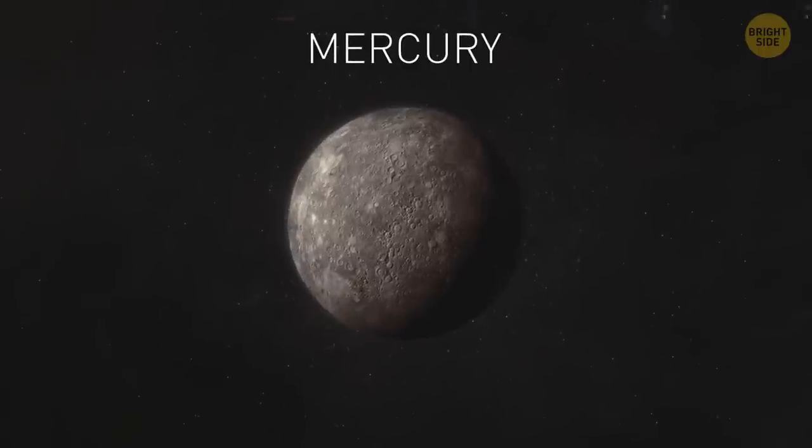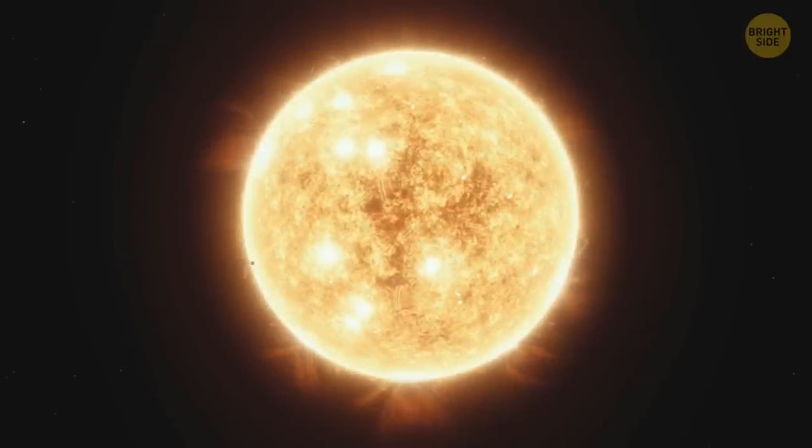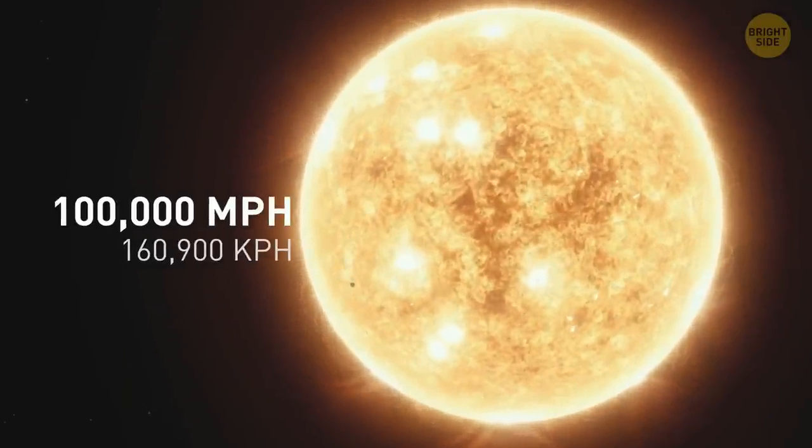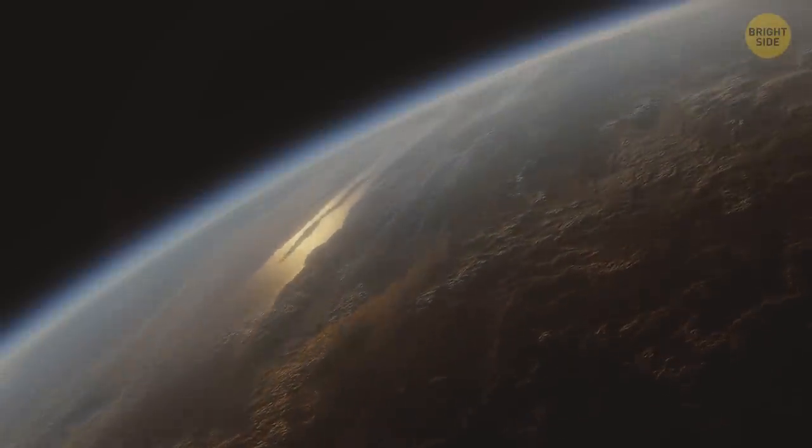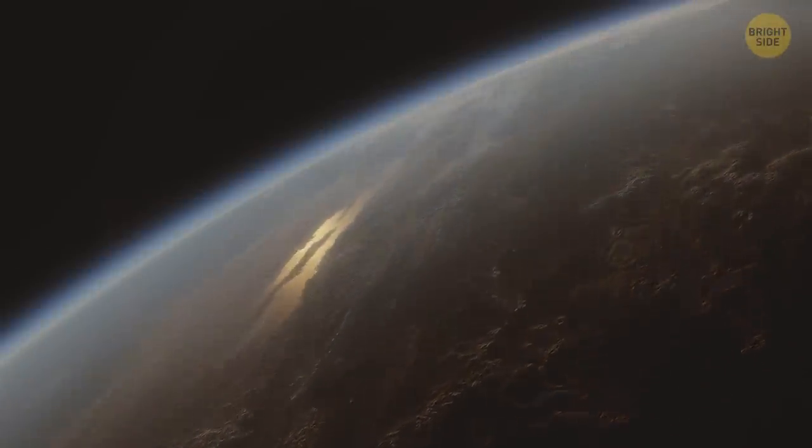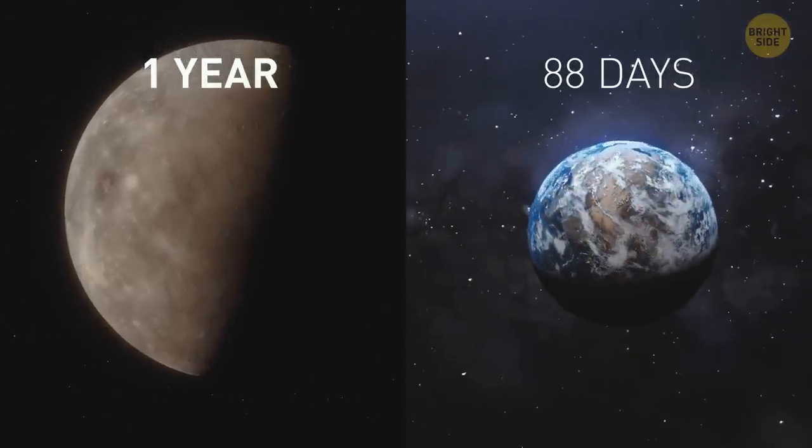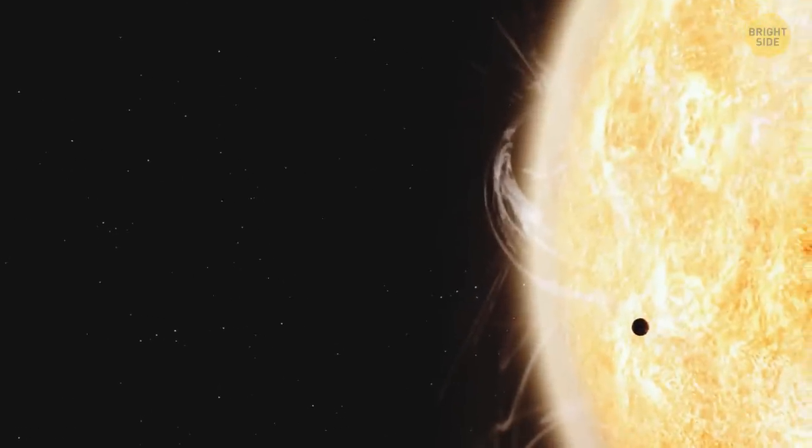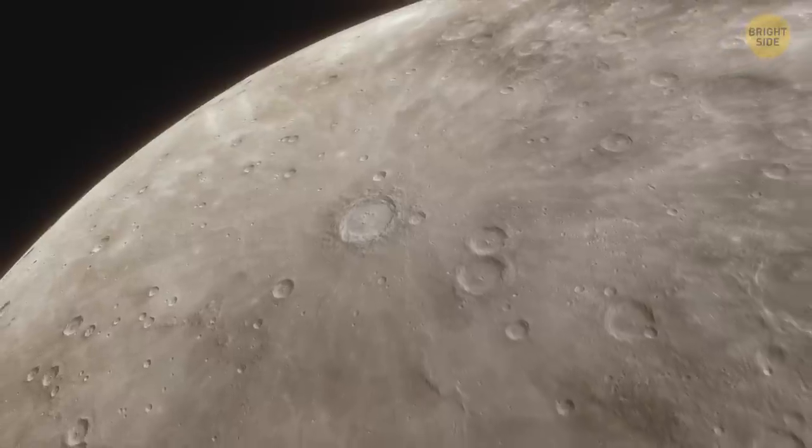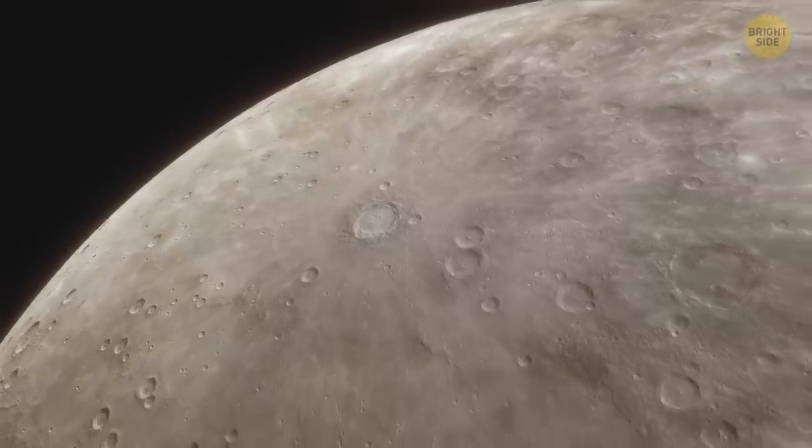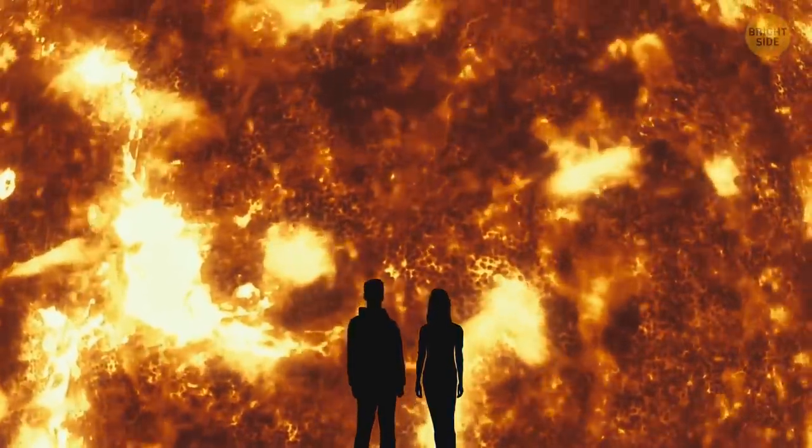Mercury is the fastest planet in the solar system. It zips around the sun at a breakneck speed of more than 100,000 miles per hour. That's around 40,000 miles per hour faster than our home planet. It's one of the reasons why a year on Mercury equals 88 days on Earth. Mercury is the planet that orbits the closest to the sun. That's why if you were standing on its surface at its closest approach to our star, the sun would look more than three times as large as it does on Earth.